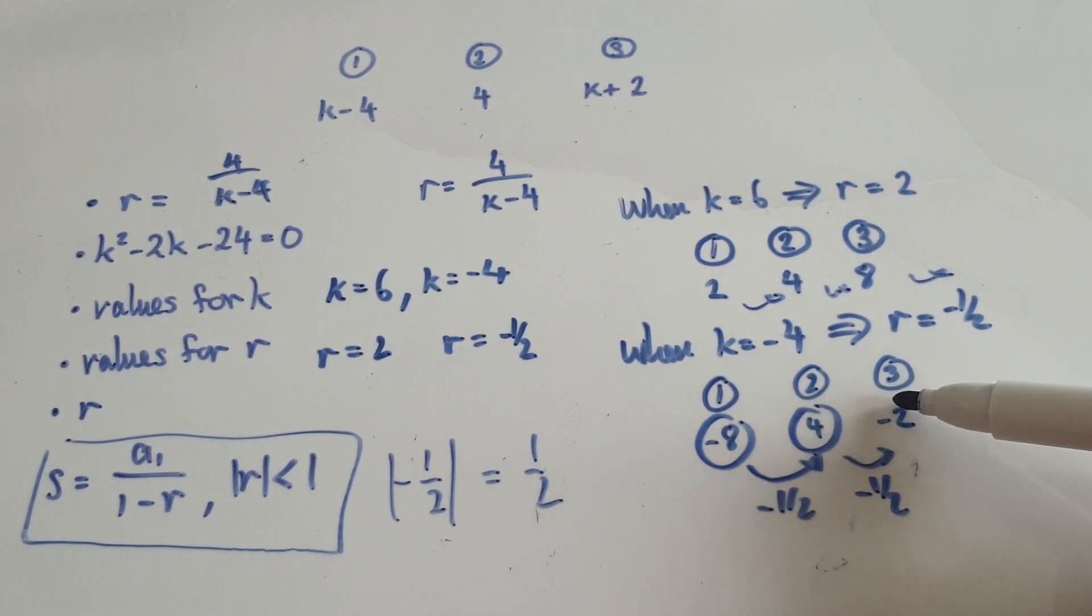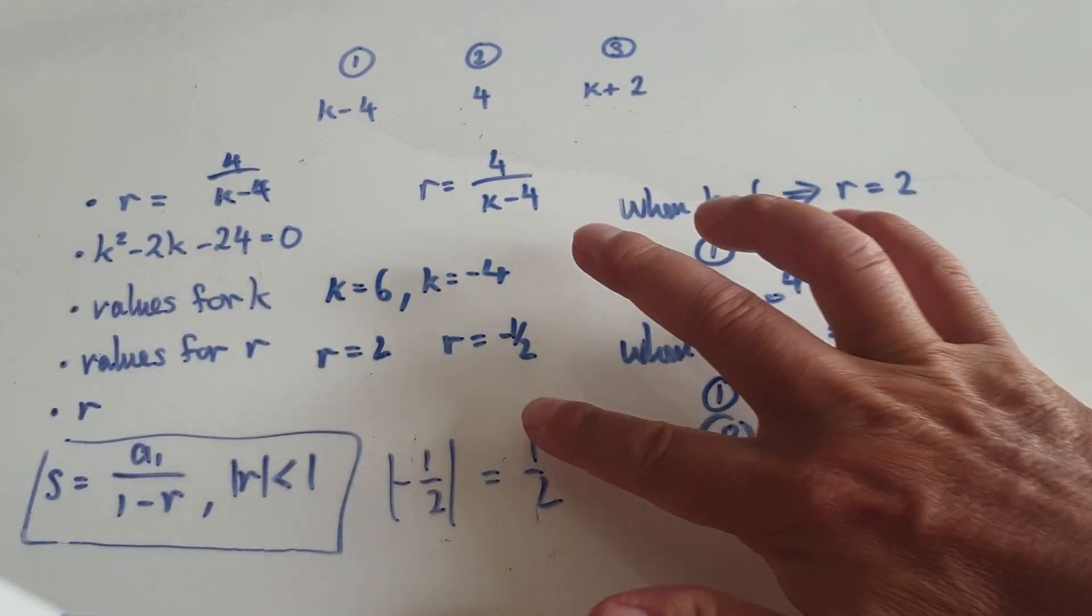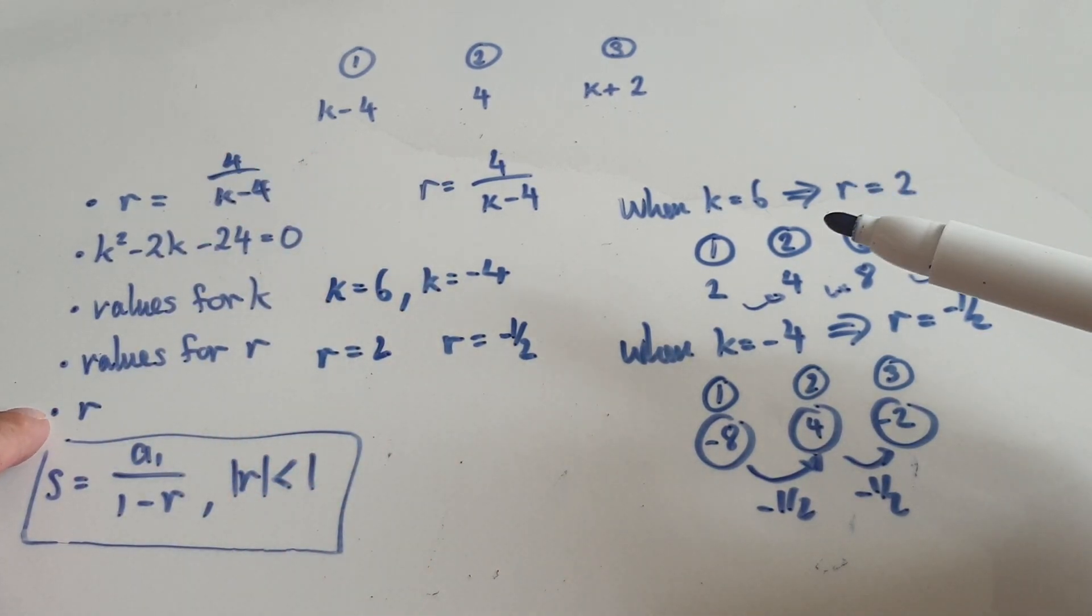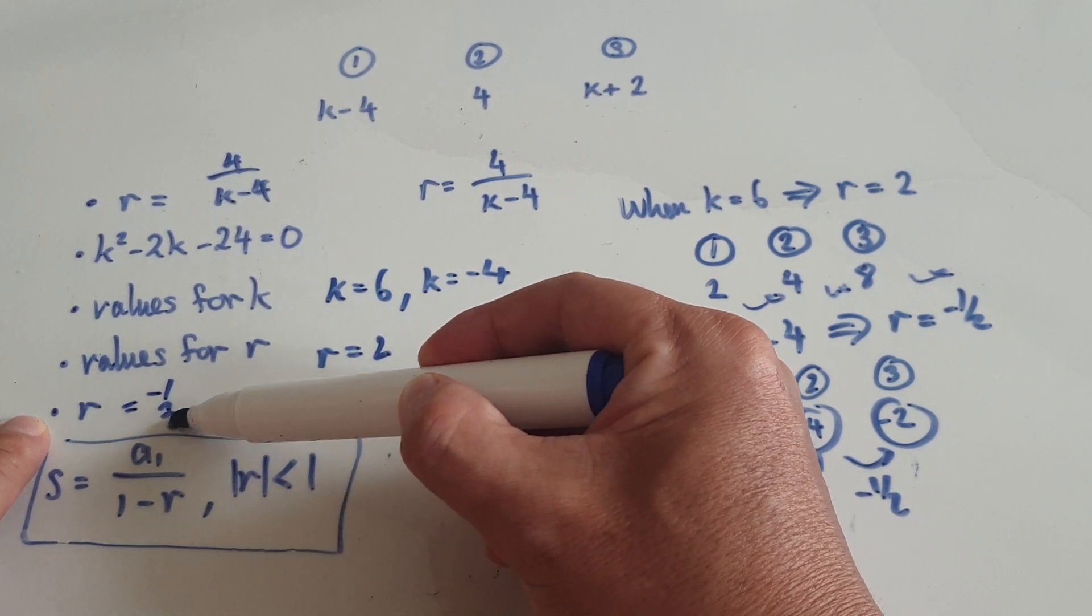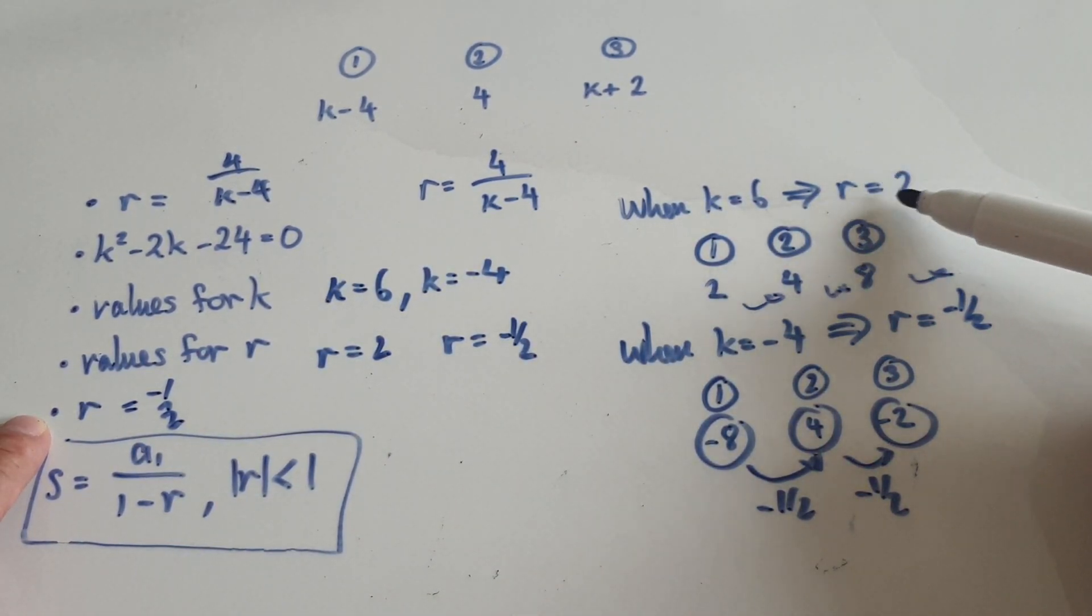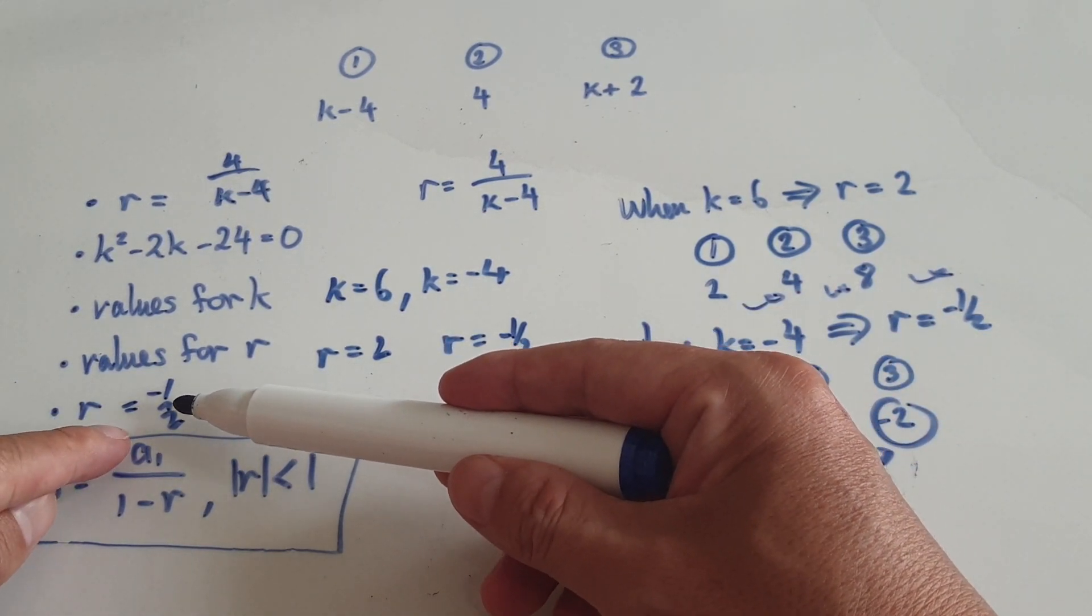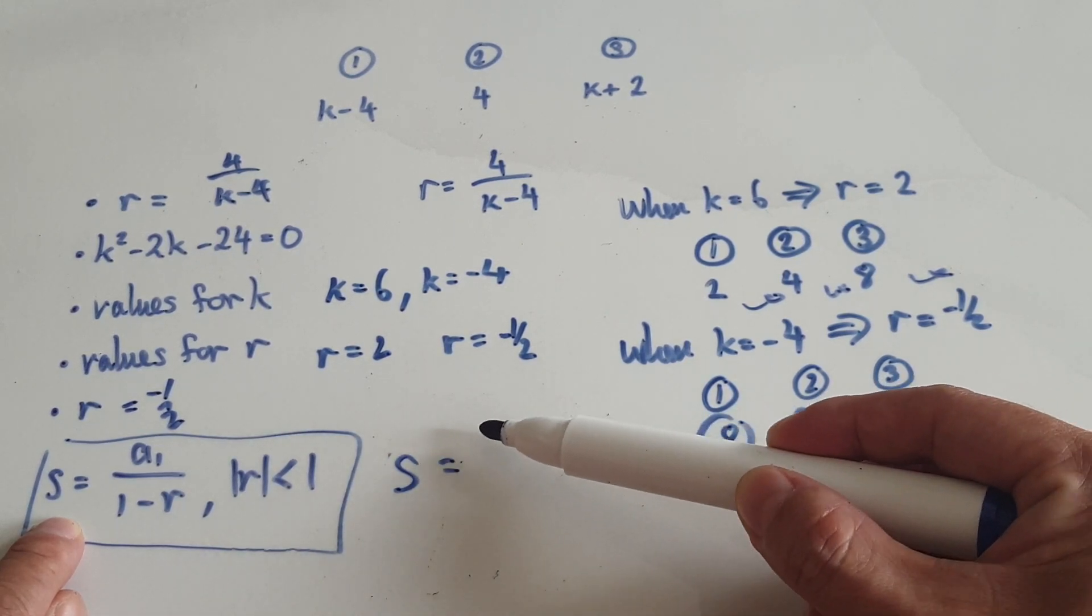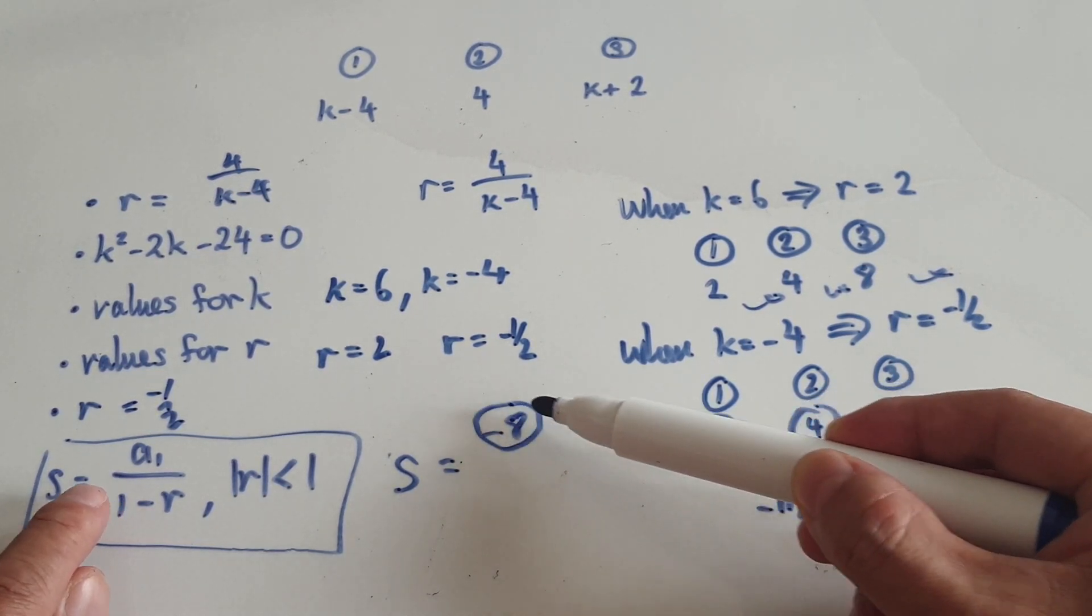To sum it up, you simply follow this formula. So our first term a1, let's try and sum up for this case. For this question here, you can only sum it up when r is negative a half. You can't sum it up when r is 2. So let's try and sum it up. S equals the first term which is negative 8, that's our first term.